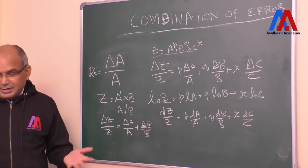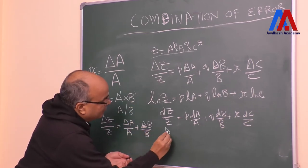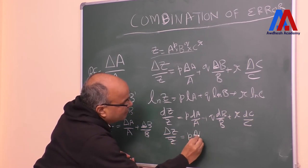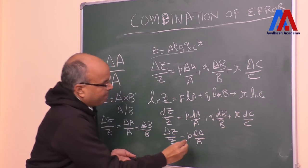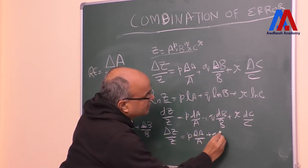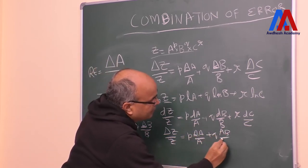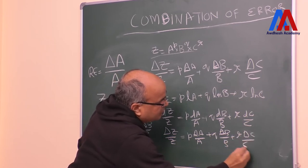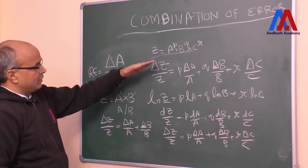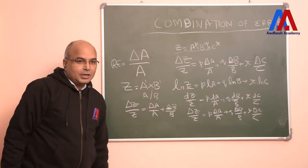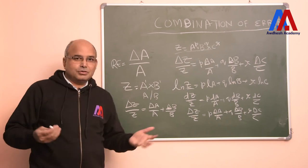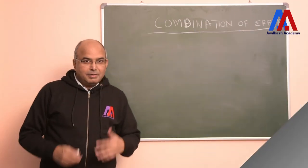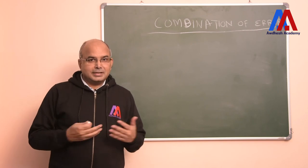And if we approximate this, we find that delta z upon z will be equal to p times delta A upon A, plus q times delta B upon B, plus r times delta C upon C. So you have seen that the same formula appears. This method is very simple and we can solve any complex problem using it. Now we will discuss a problem from the NCERT textbook.